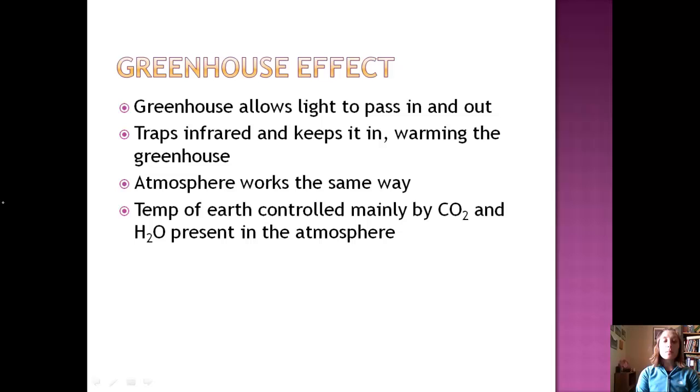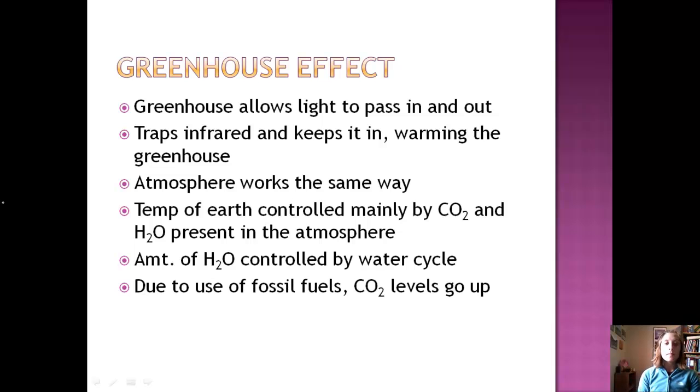We control the temperature of the Earth mainly through CO2 and the water present in the atmosphere. And the amount of water is controlled by the water cycle. We've got a lot of water in the oceans. It heats up, turns to vapor, goes into the clouds. When too much builds up, it rains or snows. It comes back down, and we have this cycle.